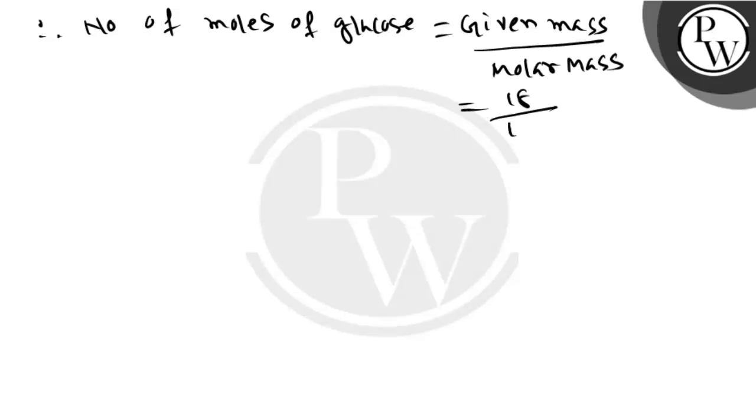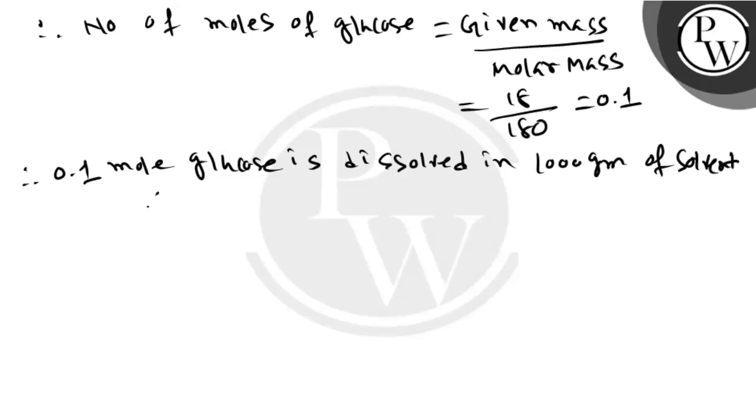Therefore, number of moles of glucose is equal to given mass by molar mass, equal to 18 by 180, which is equal to 0.1. So 0.1 moles of glucose is dissolved in 1000 gram of solvent. Therefore, molality is equal to 0.1 M.